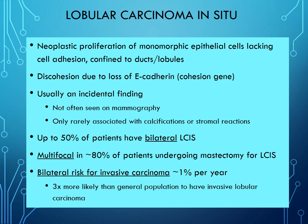Moving on to lobular carcinoma in situ: this is a neoplastic proliferation of epithelial cells that looks very bland — low-grade, very round nuclei. The key is that anything lobular has loss of E-cadherin, the cohesion molecule. LCIS is normally an incidental finding; you really can't see it on screening mammography and it's usually not associated with calcifications. Up to 50% of patients have bilateral LCIS when it's found. Patients undergoing mastectomy for LCIS typically have multifocal lesions, and there is a risk for bilateral invasive breast cancer associated with this lesion.